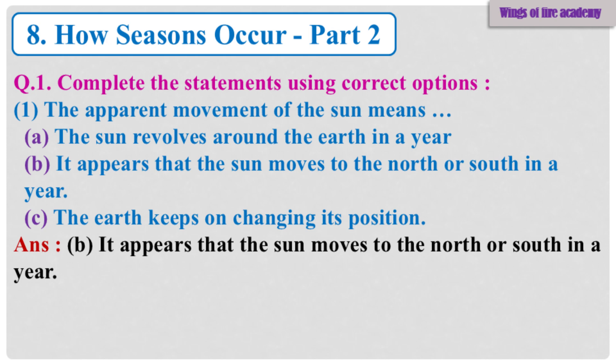Question 1: Complete the statements using correct options. Sub-Question 1: The apparent movement of the sun means — A. The sun revolves around the earth in a year. B. It appears that the sun moves to the north or south in a year. C. The earth keeps on changing its position. Answer: B. It appears that the sun moves to the north or south in a year.